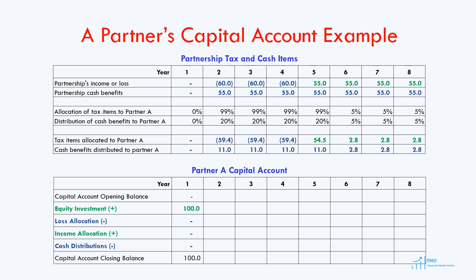In year 2, the capital account opening balance equals the closing balance from the last period, so it will be 100. There is no equity investment in year 2. We now have a loss of 59.4 allocated to partner A, which will be included in the capital account. There is no income in year 2, so the income allocation will be 0. We have a cash distribution of 11 to partner A in year 2. Cash distributions are subtracted from the capital account balance, so the capital account closing balance in year 2 is 29.6.